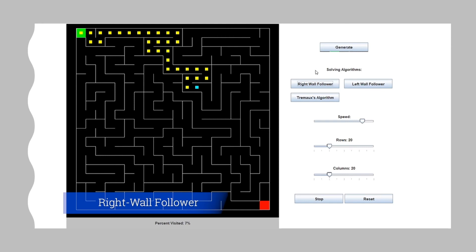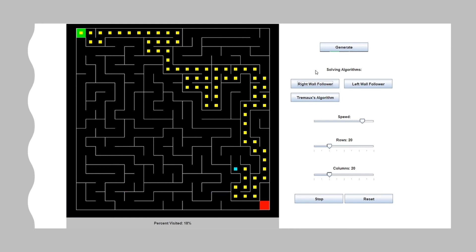Now we are performing the right wall following algorithm. The active path is signified by the yellow squares. The current cell is the cyan square and the paths determined to be dead ends are marked with gray squares.